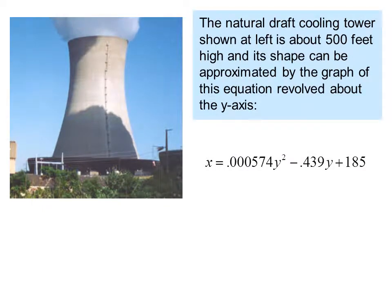The natural draft cooling tower shown at left is about 500 feet high, and its shape can be approximated by the graph of this equation revolved about the y axis: x equals 0.000574y squared minus 0.439y plus 185. And by the way, this is not the actual equation that we use to construct the tower, but it does give us a good approximation.